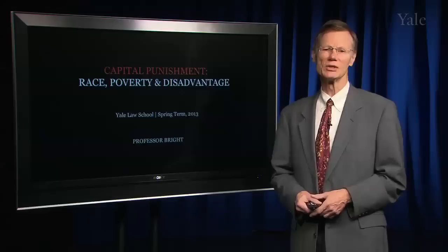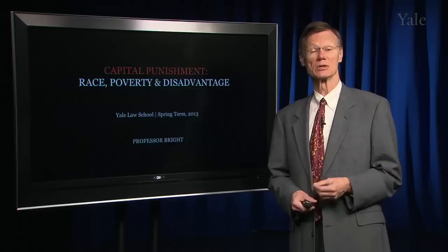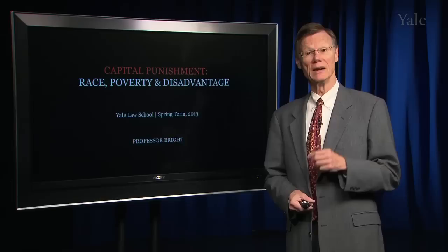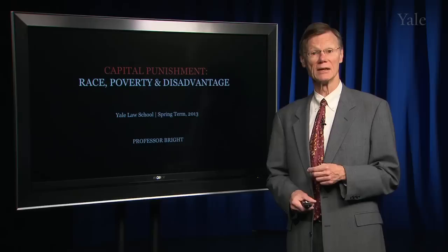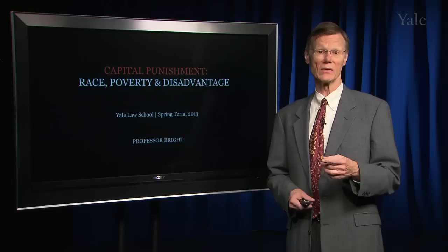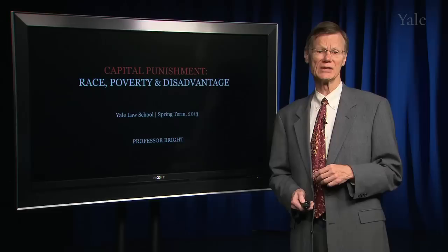Today we're going to look at challenges to the death penalty in the Supreme Court. In 1971, a challenge was launched based on the due process clause of the Fourteenth Amendment. It was unsuccessful. The very next year, 1972, another challenge was made under the Eighth Amendment, the Cruel and Unusual Punishment Clause, and it was successful. We'll get a bit of history of the death penalty and then look at the procedures adopted in 1976 and where the court has gone from there.